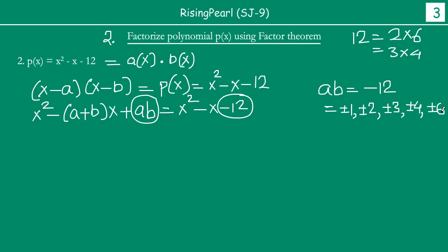This is an example of how questions can look the same but get very lengthy. Conceptually it is exactly the same, but when you sit down to solve it you will realize this can get very long. Now we have to find out the value of the polynomial p at x equal to each of these 10 values. We will start with p of minus 1.